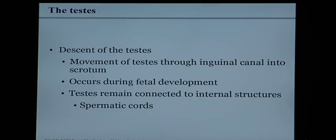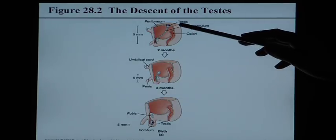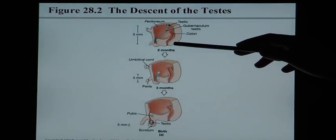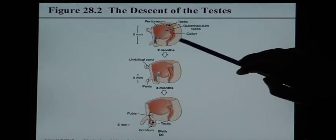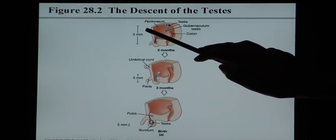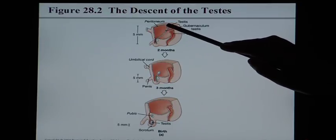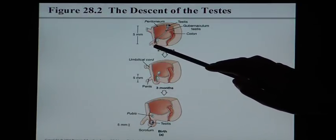When a baby fetus is forming, a baby boy's testicles actually start up very high in his abdomen, near the kidneys. As fetal development continues, the testes should descend into the scrotal sac. In a two-month fetus — maybe the size of a peanut — we can see the testicle way up near the kidney and the scrotal sac way down below.